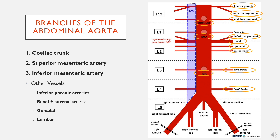So in total, these are the branches of the abdominal aorta, and the three key ones are the celiac, the superior mesenteric artery, and the inferior mesenteric artery.